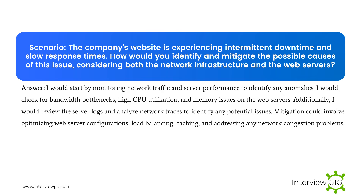The company's website is experiencing intermittent downtime and slow response times. How would you identify and mitigate the possible causes, considering both the network infrastructure and the web servers? I would start by monitoring network traffic and server performance to identify any anomalies. I would check for bandwidth bottlenecks, high CPU utilization, and memory issues on the web servers. Additionally, I would review the server logs and analyze network traces to identify any potential issues. Mitigation could involve optimizing web server configurations, load balancing, caching, and addressing any network congestion problems.